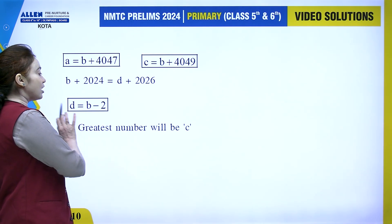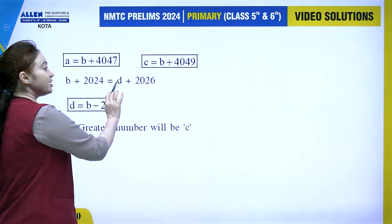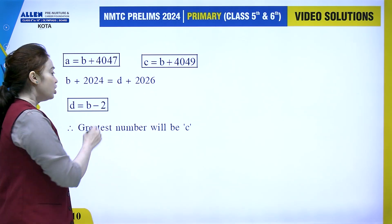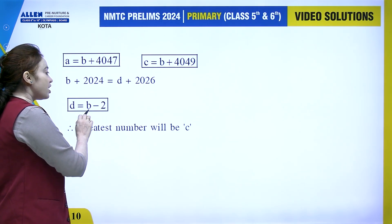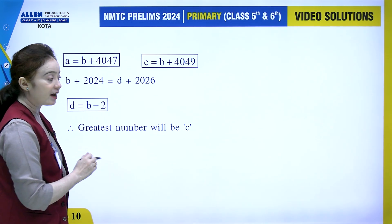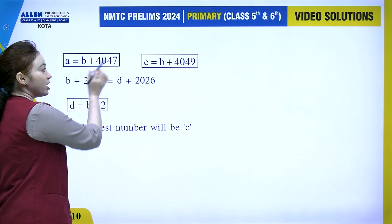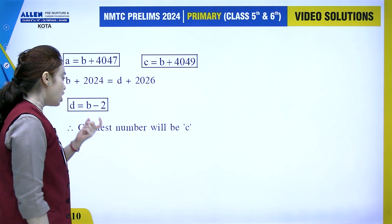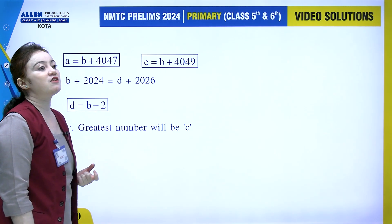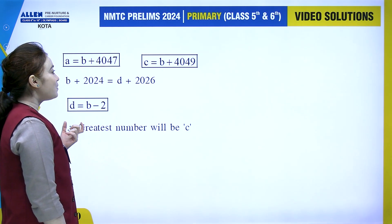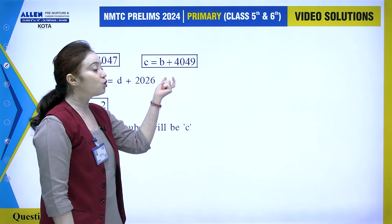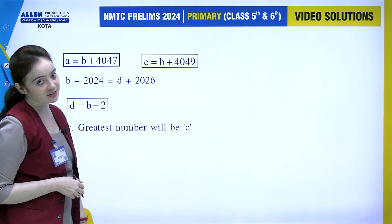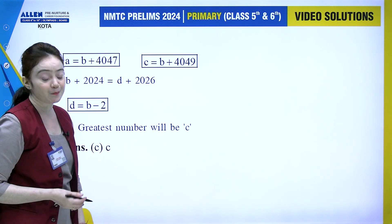We can calculate the value of c and d similarly. C equals a minus 4048, and d equals a minus 4049. Clearly, the greatest number will be a, then b, then c. So my option number C is the correct answer.